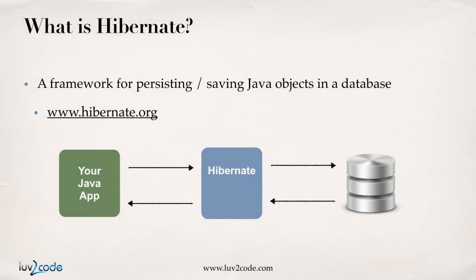So first off, what is Hibernate? Basically, Hibernate is a framework for persisting or saving Java objects into a database. It's a very popular framework used by a lot of enterprise Java projects. You can download it for free from Hibernate.org, and I'll cover the downloading portion later in another video. But basically, at a very high level, you'll have your Java application, it'll make use of this Hibernate framework, and you can use it for saving and retrieving data from the database.